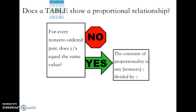Does the table show a proportional relationship? What you need to do is look at every non-zero ordered pair and see if y divided by x equals the same value. If not, it's not proportional. If so, the constant of proportionality is any non-zero y divided by its corresponding x.